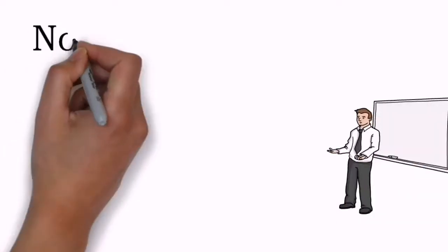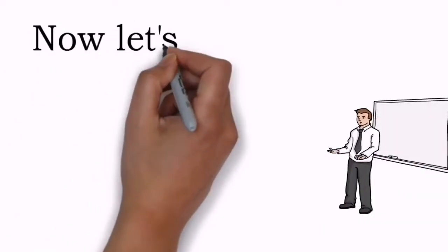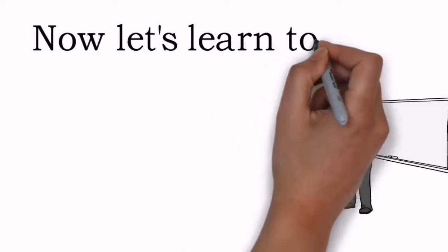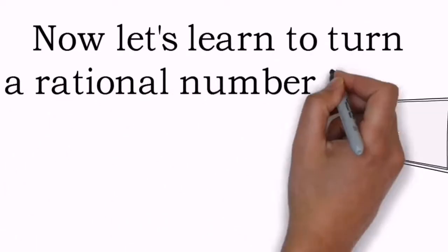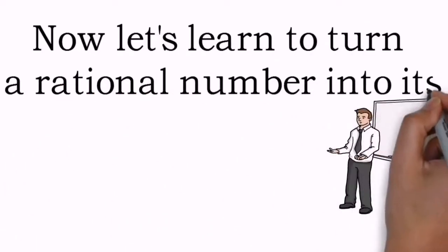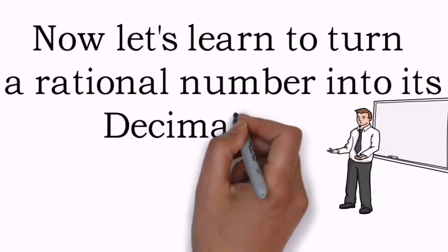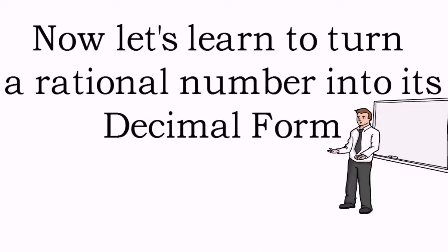As we have understood the meaning of terminating and non-terminating decimal forms, let's now try to convert rational numbers into their decimal form properly.